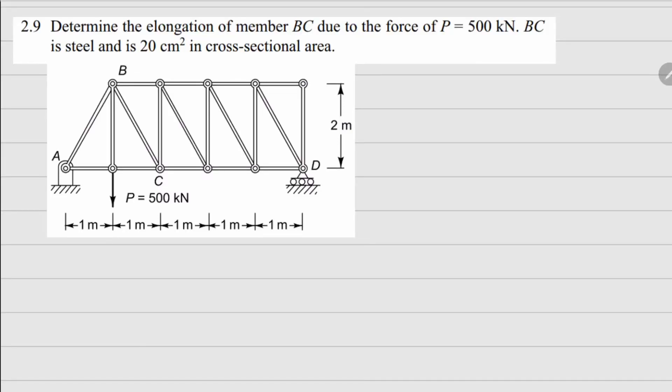This is problem 2.9 with a large truss structure. We need to find the elongation in member BC, which is right here. The force applied is 500 kilonewtons, the material is steel, and the cross-sectional area is 20 centimeter square.